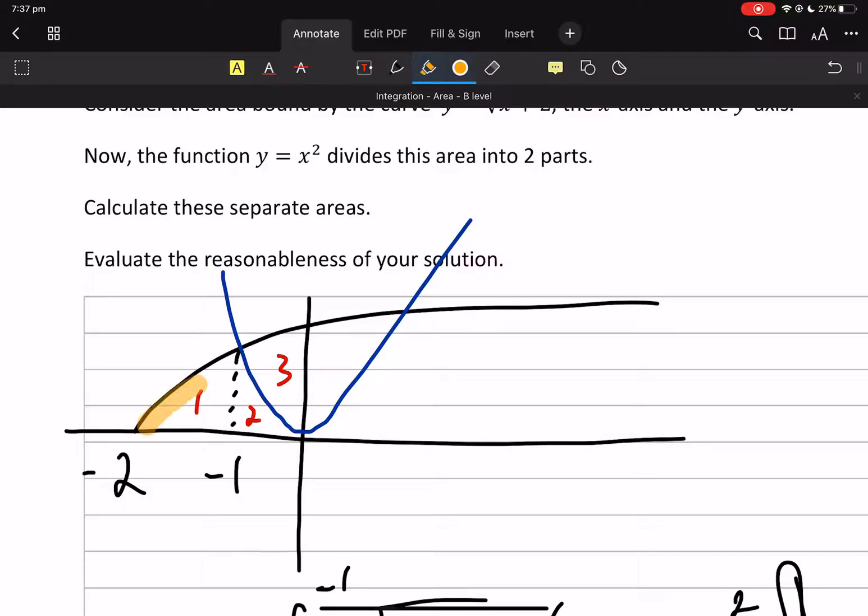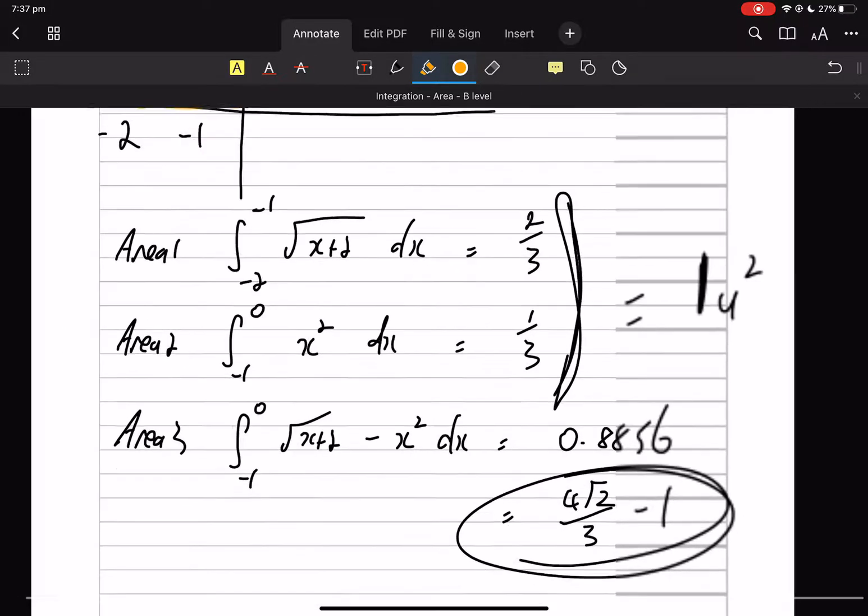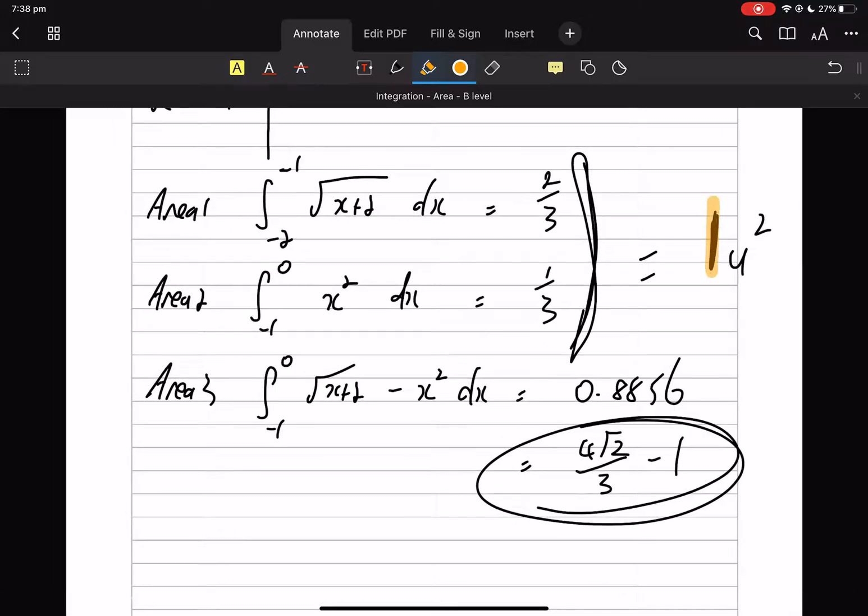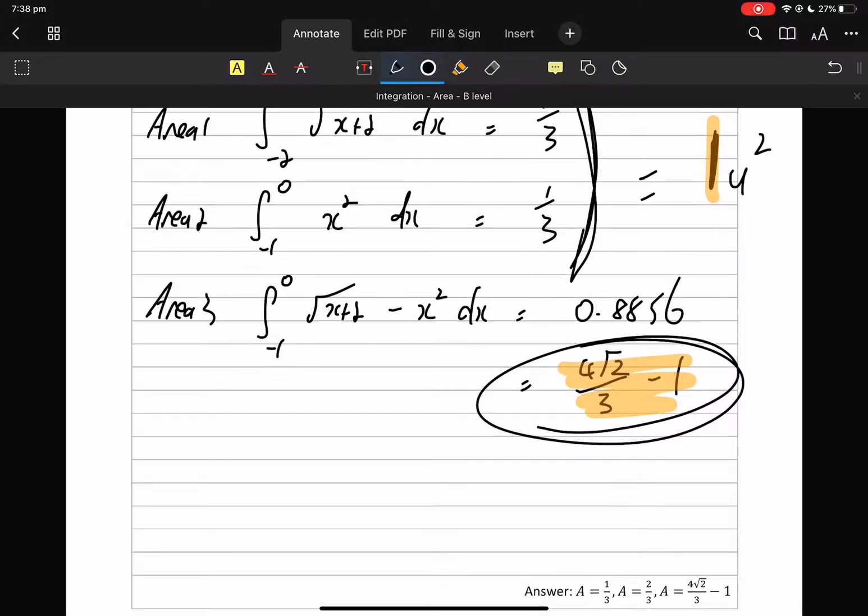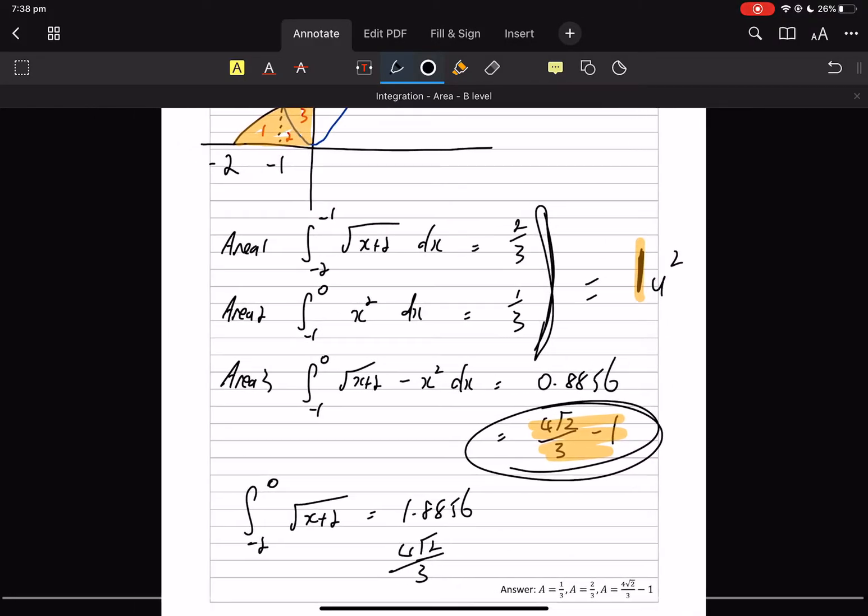And hopefully it will actually be all of these together, because it's 1, 2, and 3 all together. So you could just do the integral between -2 and 0 of √(x+2), and you're either going to get 1.8856, or if you do it manually, you're going to get 4√2/3, which sort of makes sense because that's 1, take the 1 off, that's the whole area under the square root.